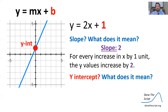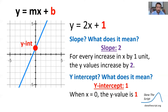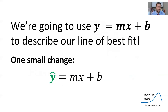The y-intercept is the b in y equals mx plus b. That means when x equals 0, the y-value is 1, which you can see as the red dot on the chart. So we're going to use y equals mx plus b to describe our line of best fit, with one small change.